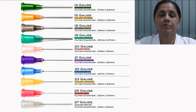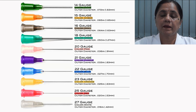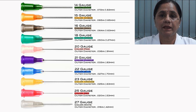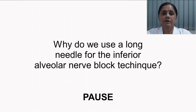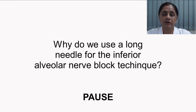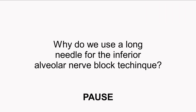The approximate length of the needle used is one and five-eighths of an inch, that is nearly 38 millimeters. At this point, pause the video again and answer: why do we use a long needle for the inferior alveolar nerve block technique? Discuss with your peer group and answer.